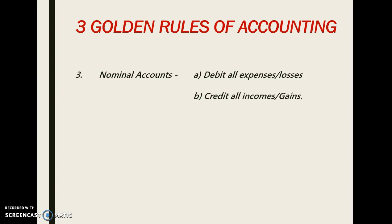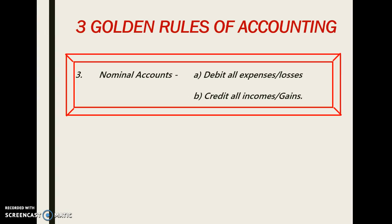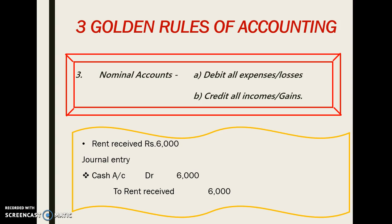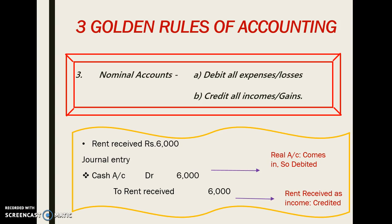Now related to nominal account — the third golden rule of accounting says: debit all expenses and losses, credit all incomes and gains. Let's see one example: rent received rupees 6000. The journal entry is cash account debit 6000 to rent received. Here, cash account is a real account and cash is received so it is debited as per the second rule. Rent received is income for us, so we credit it. In short, as per the third golden rule — nominal account: debit all expenses and losses, credit all incomes and gains.